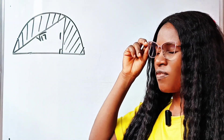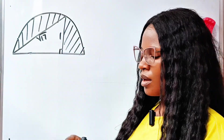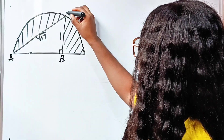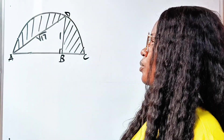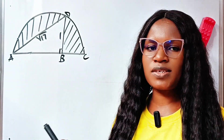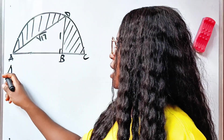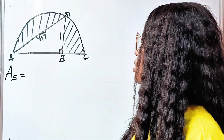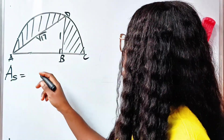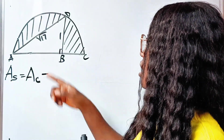We should find the area of the shaded portion. This is a semicircle. Let's name this triangle with points A, B, C, and D. So how do we go about this? First, the area of the shaded portion will be equal to the area of this whole shape — which is a semicircle — minus the area of this triangle.